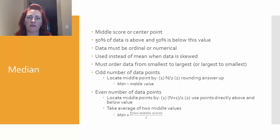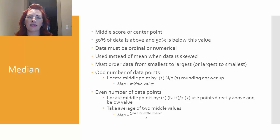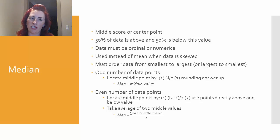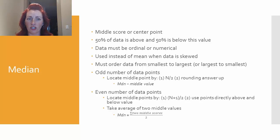In order to calculate the median, we must first order our data from smallest to largest or largest to smallest. This allows us to see the points in sequential order and then determine the physical center point. If we have an odd number of data points, we locate the middle point by taking the number of values, dividing by 2, and rounding that answer up. If we have an even number of data points, we must locate the two middle data points and take an average of those two.